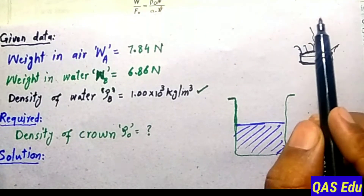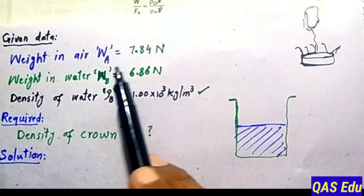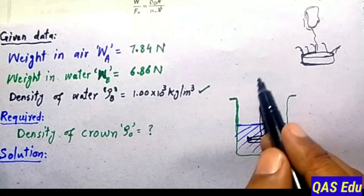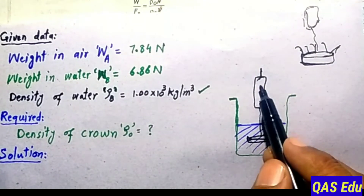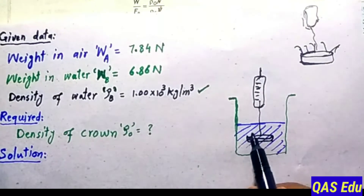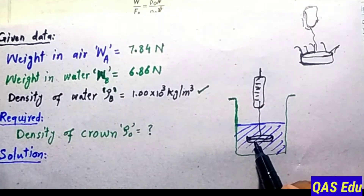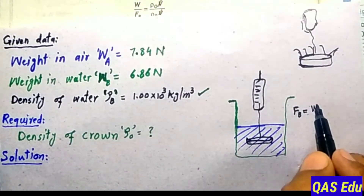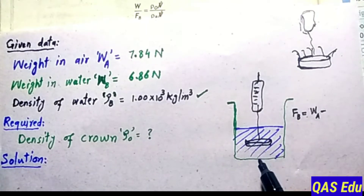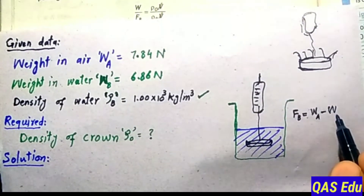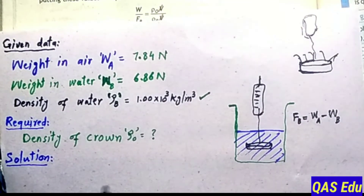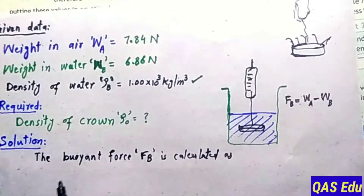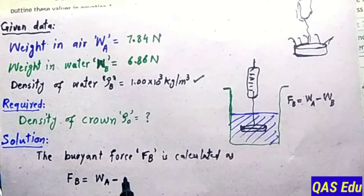Looking at the crown on the spring balance: the weight in air is 7.84 Newton. When immersed in water, the spring balance reads 6.86 Newton. This is because there is a buoyant force acting on the crown. The buoyant force equals the apparent weight.